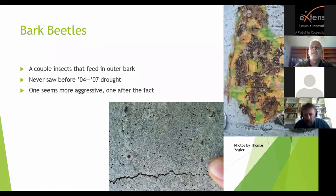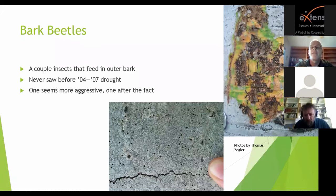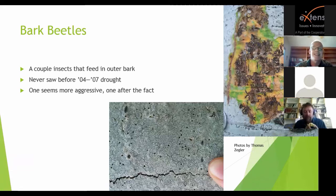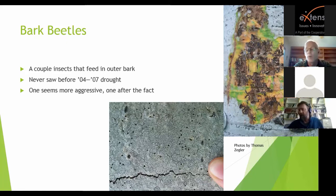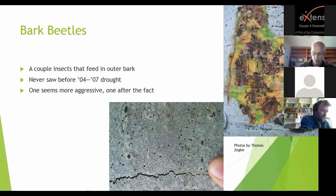The final group is bark beetles — tiny insects that feed in the outer bark. Their exit holes are no bigger than a pinprick, and the insect itself is maybe a tenth the size of a grain of rice. We really never saw these in the Intermountain region before a big drought around 2004 to 2007 — they were barely detectable if present at all. One of the bark beetle species seems fairly aggressive and is involved in killing trees, while the other is really only present on trees that are already close to being killed by something else.